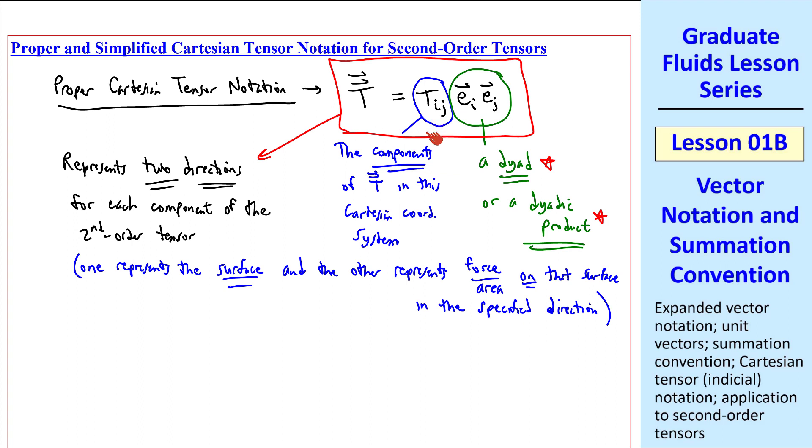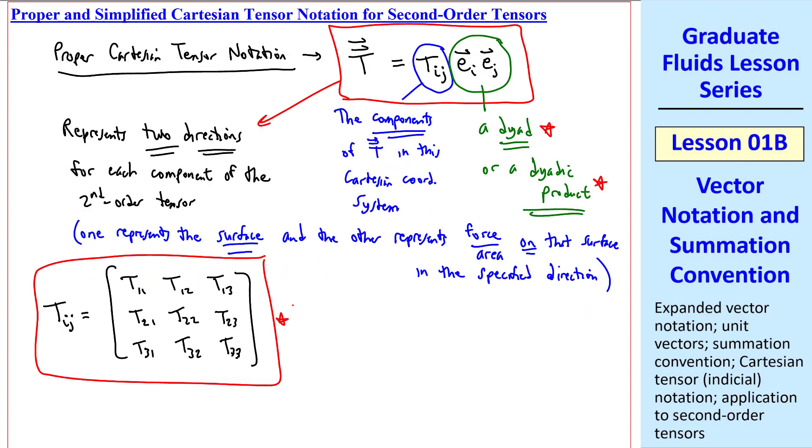Tij itself, in tensor notation, can be written like a matrix. The first row is t11, t12, t13. The second row is t21, t22, and t23, and then t31, t32, and t33. Here's where tensor notation starts to be very convenient and useful. Using my arrow for implies, we can say that t double arrow implies tij, and tij implies t double vector. Since there are two indices, we recognize this as a second-order tensor.